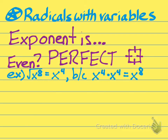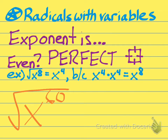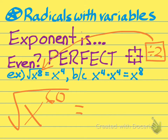Likewise, if you were to have x to the sixtieth power and square root it, you would basically just take the exponent and divide it by two, leaving you with x to the thirtieth power. That is the basic rule for dealing with variables that have even exponents.